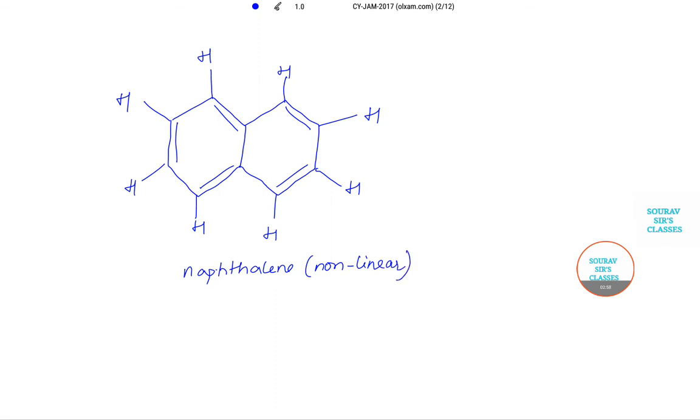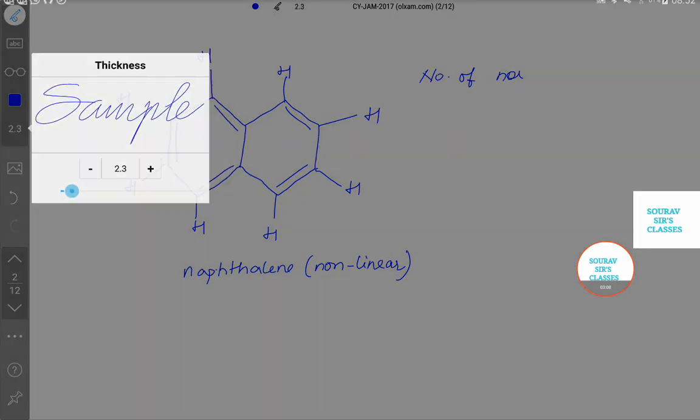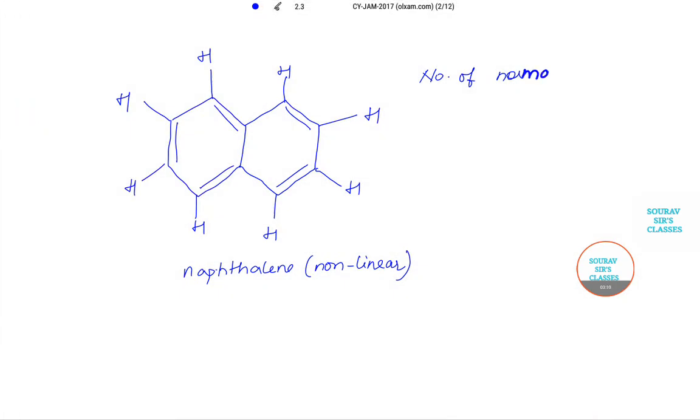Now we need to comment on the number of vibrational modes. Number of normal vibrational modes is equal to 3n minus 6. What is n here? n is nothing but the number of atoms. We know this but still I am writing.